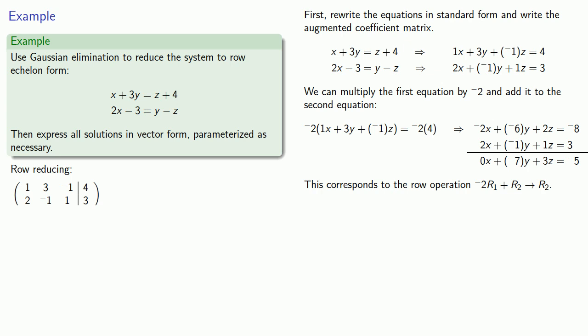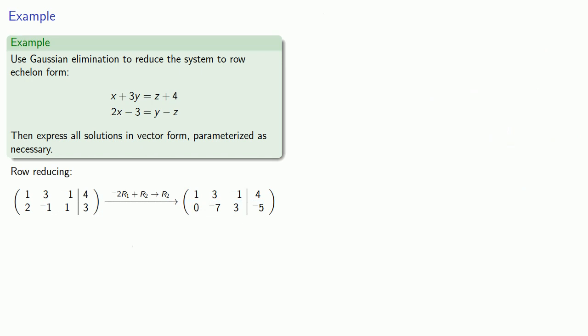This will change our augmented coefficient matrix. The first equation remains unchanged, so the first row remains unchanged. The second equation has been altered, so we'll replace that second row with the new second equation. The first row still corresponds to 1x plus 3y plus negative 1z equals 4. Our second row corresponds to negative 7y plus 3z equals negative 5.